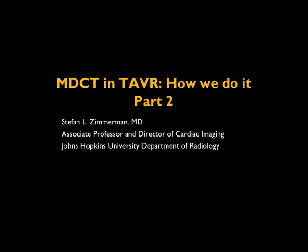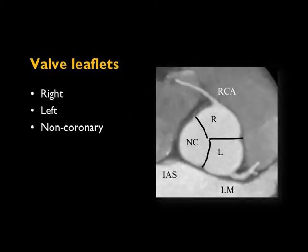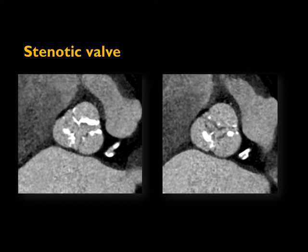This is a picture of the normal aortic valve in systole on the left and diastole on the right, showing the nice tri-leaflet appearance and triangular-shaped opening of the aortic valve orifice. The upper right image is an oblique sagittal three-chamber view showing we're just above the aortic valve leaflets. The valve leaflets and cusps are named based on the coronary arteries that arise from them: the right, left, and non-coronary cusps.